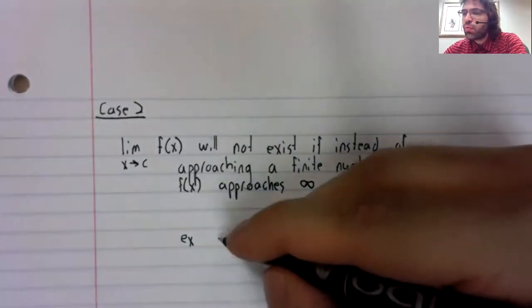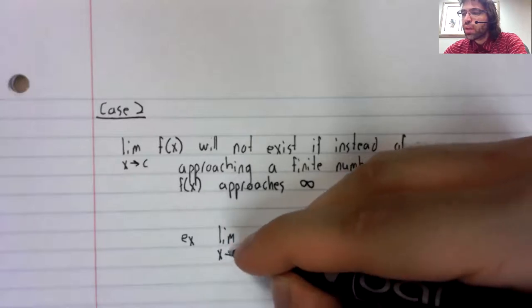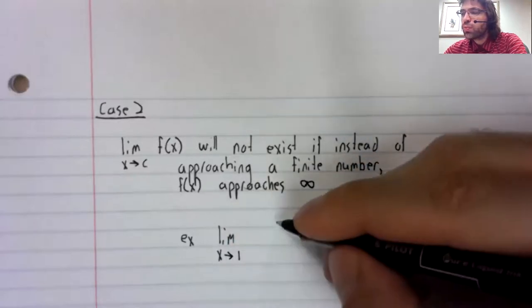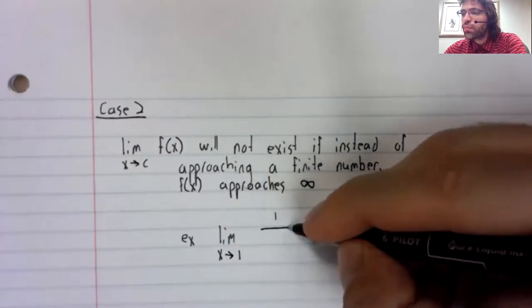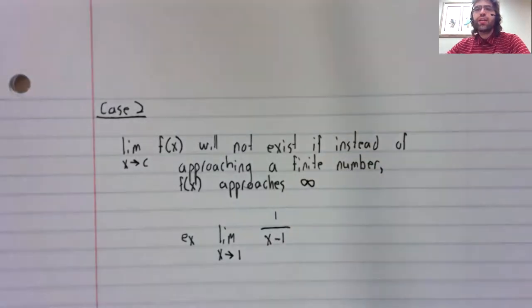As an example of this, we might look at the limit as x approaches one of one divided by x minus one.